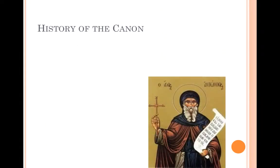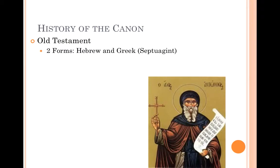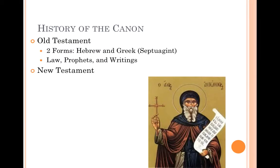This is a picture — an icon — of Athanasius. How do we make sense of how the New Testament canon developed? The Old Testament was developed rather early. There are actually two forms: the Hebrew version, which is the older, and the Greek version called the Septuagint. The Old Testament was divided into the Law, the Prophets, and the Writings. But what about the New Testament?